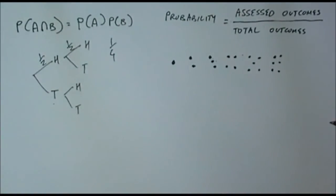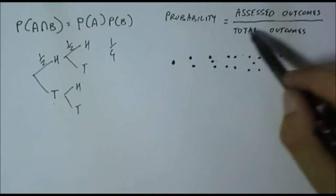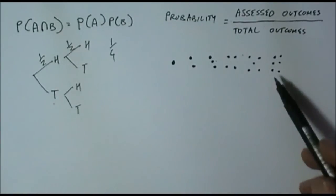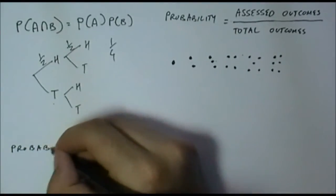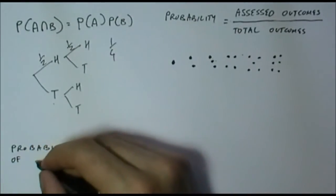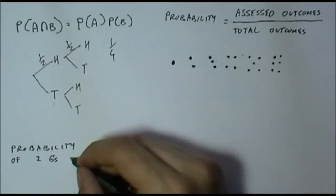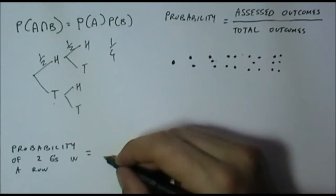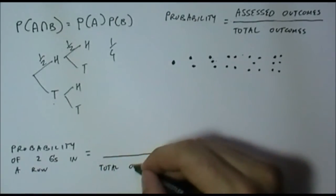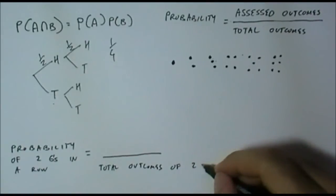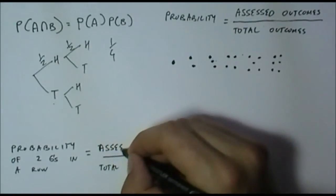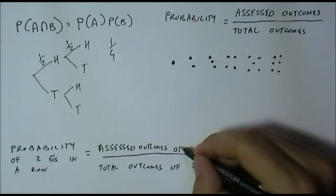This definition of probability does not change when we are looking at multiple probabilities. We're still looking at all the assessed outcomes and all the total outcomes. So we can actually rewrite it. Let's say we're looking at the probability of rolling two sixes in a row. We still need to work out the total outcomes of two rolls of the dice, and we need all the assessed outcomes of two rolls.